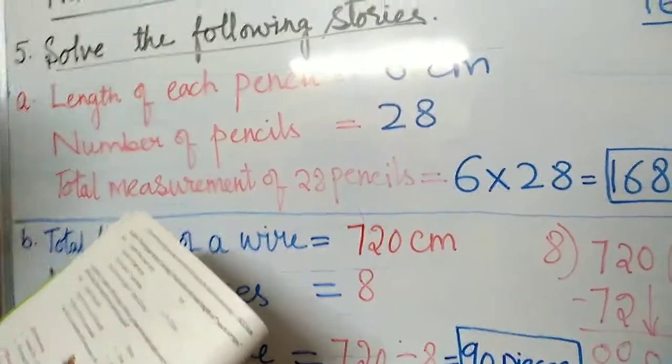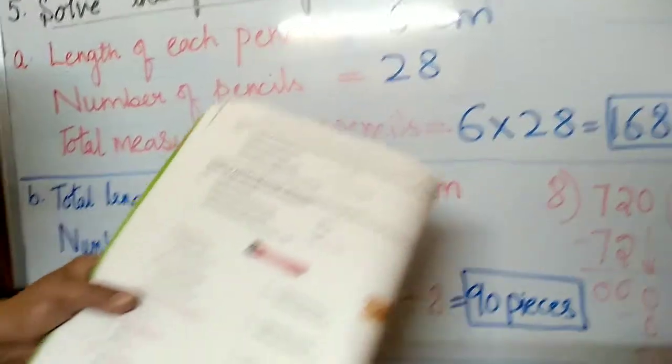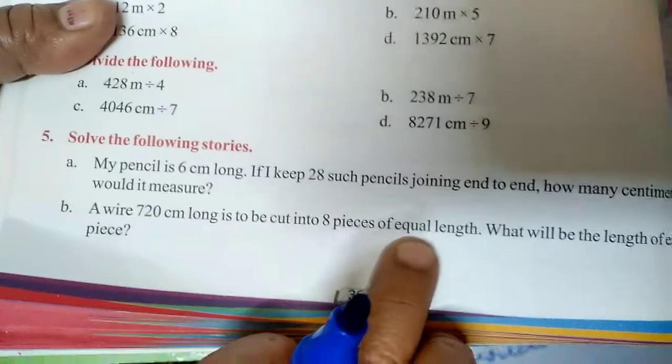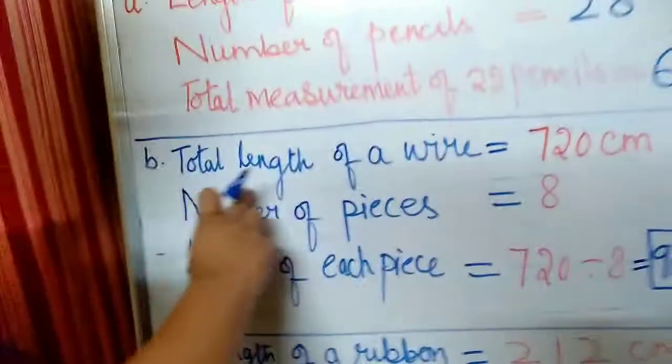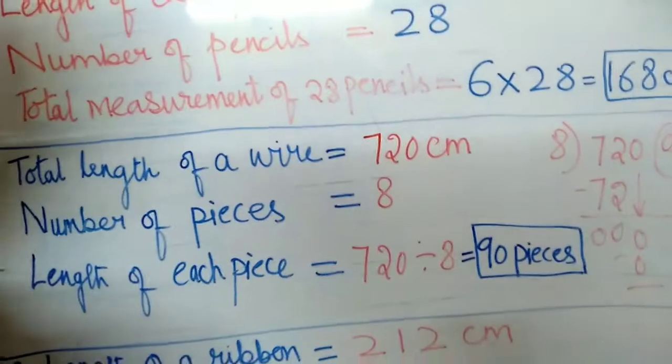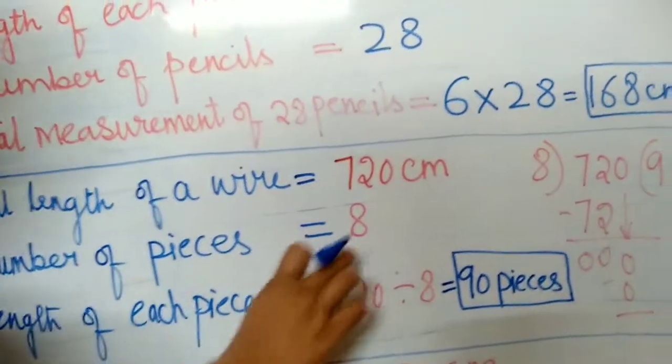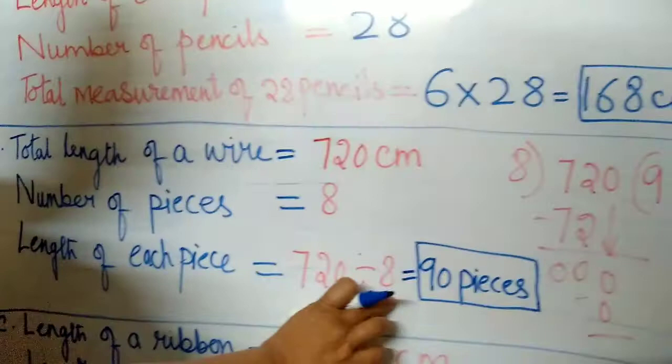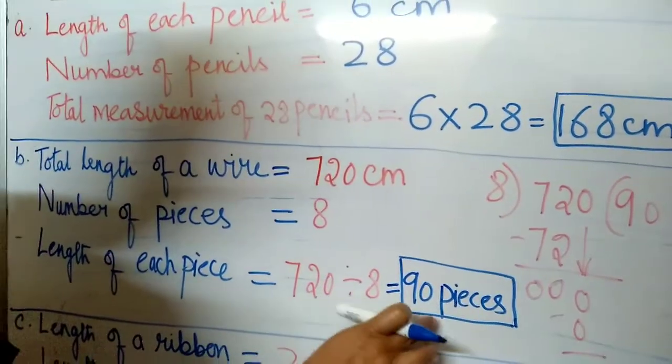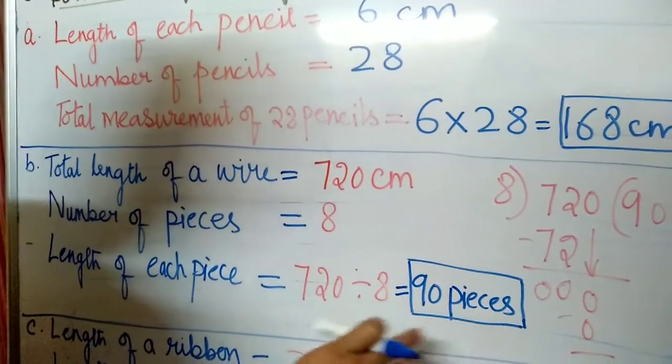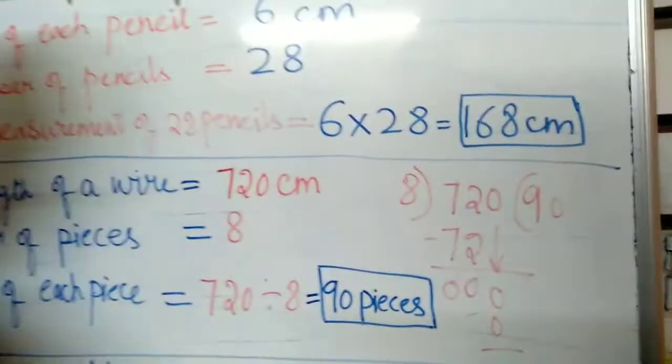Second is, a wire of 720 cm long is to be cut into 8 pieces of equal length. What will be the length of each piece? Total length of wire is 720 cm. Number of pieces, 8. So 720 divided by 8. If you divide, you will get 90 cm. Each piece, length of each piece is 90 cm.